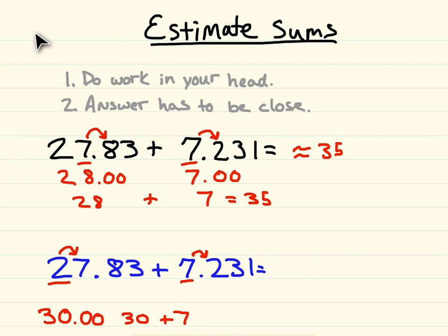So we have 30 plus 7, which is 37. So your sum is about 37.